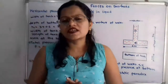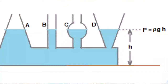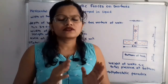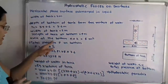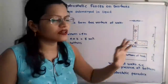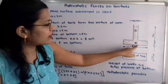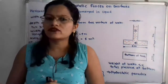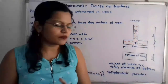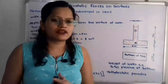The hydrostatic paradox states that if containers of different shapes have the same base area and are filled with liquid to the same height h, then the force applied by the liquid on the base area is exactly the same — the shape of the container does not affect the applied force at the bottom. Here, because the weight of water is much less than the total pressure at the bottom, the concept of hydrostatic paradox is followed.